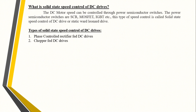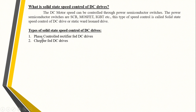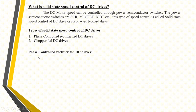There are two types of solid-state speed control of DC drives: one is phase-controlled rectifier fed DC drive, and another is chopper fed DC drive. Phase-controlled rectifier means converting fixed AC voltage into variable DC voltage. The output voltage of the rectifier is controlled with the help of firing angle, that is, phase. A chopper is a power electronic converter used to convert fixed DC voltage into variable DC voltage.